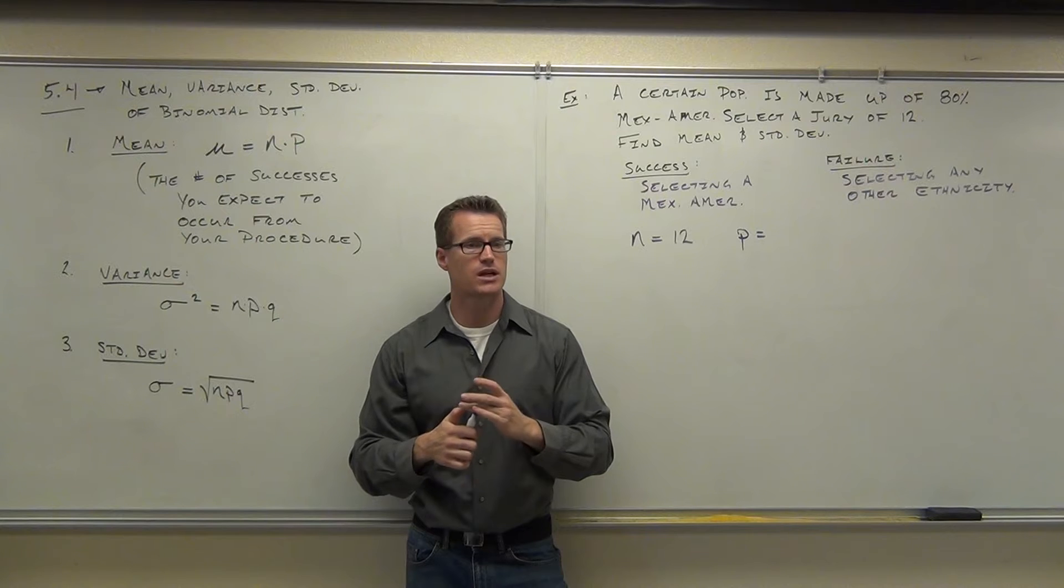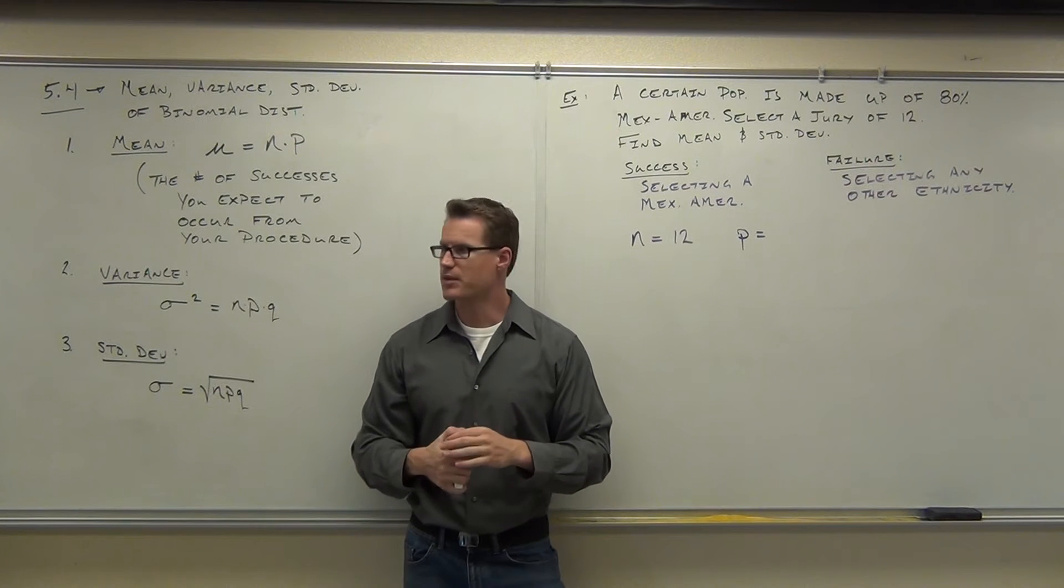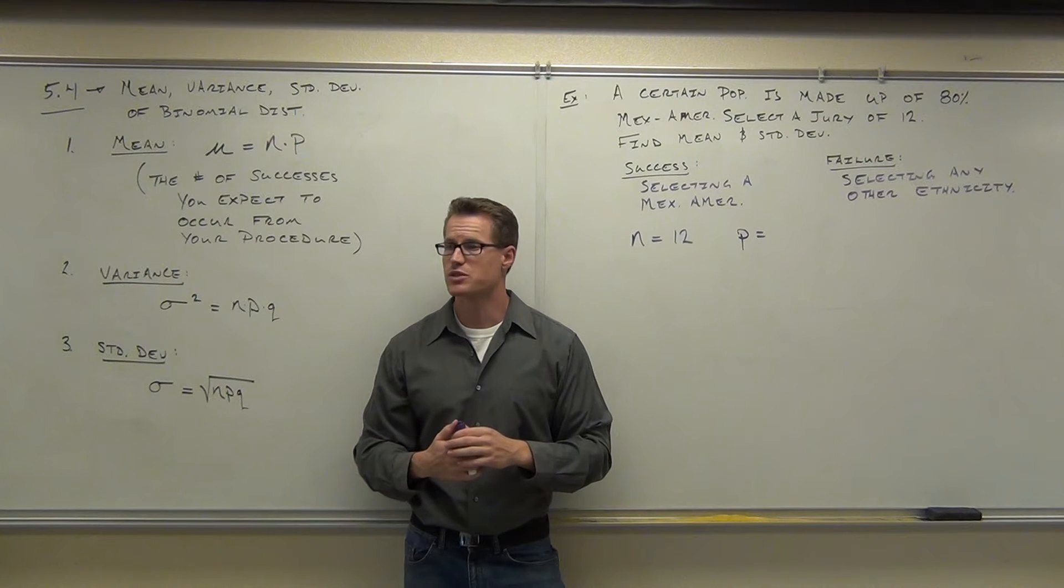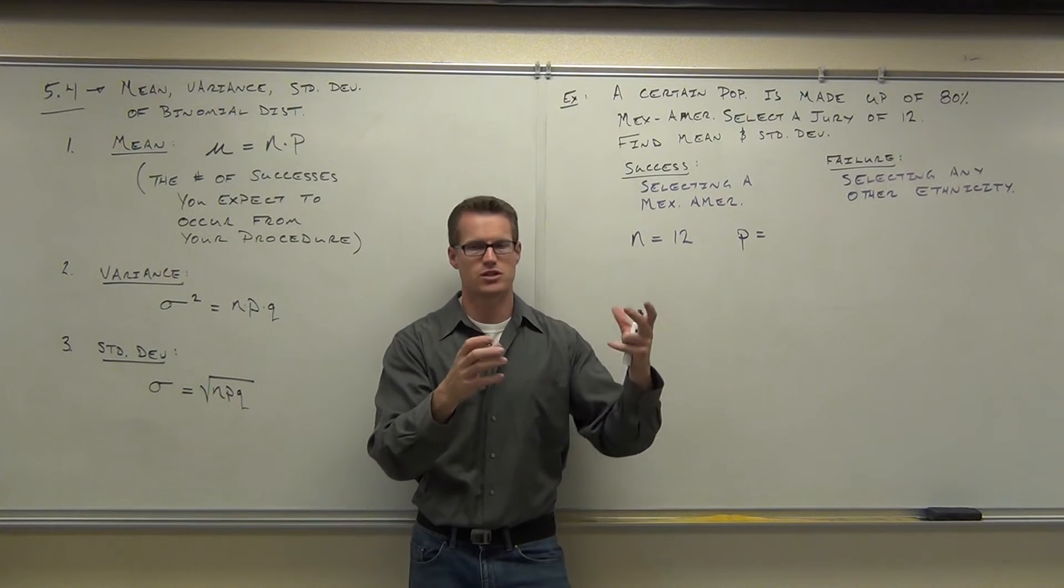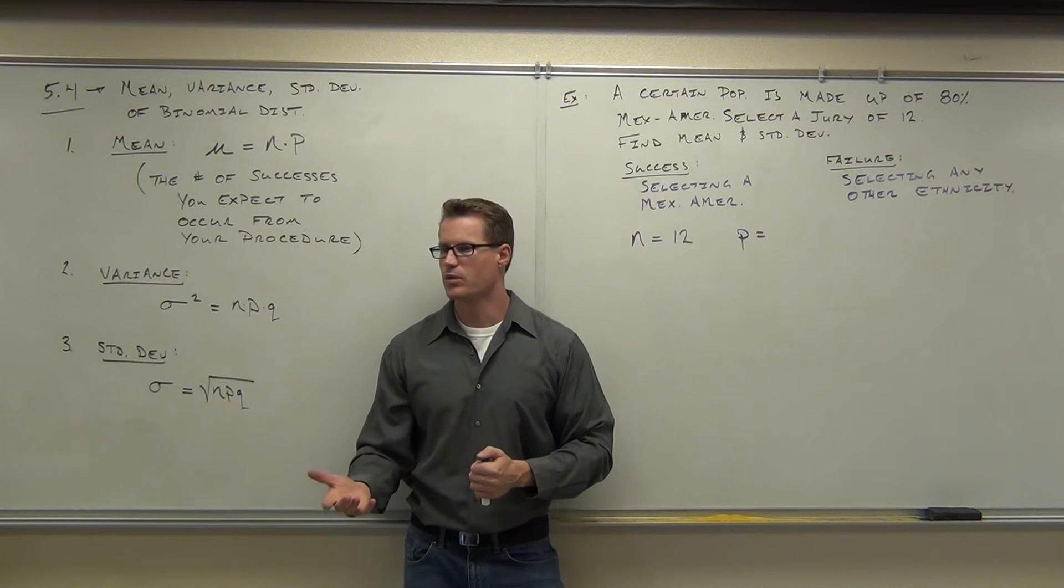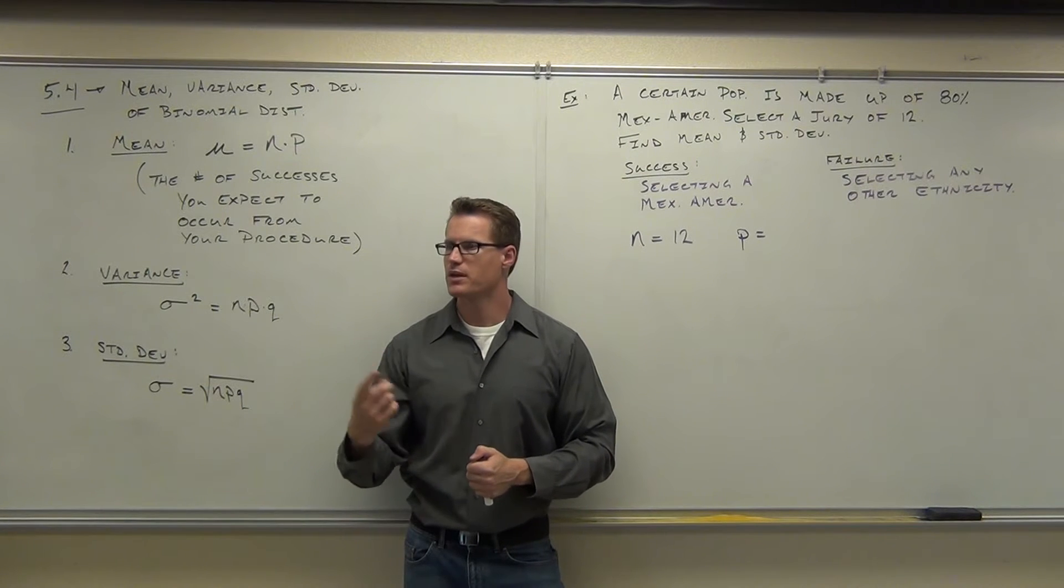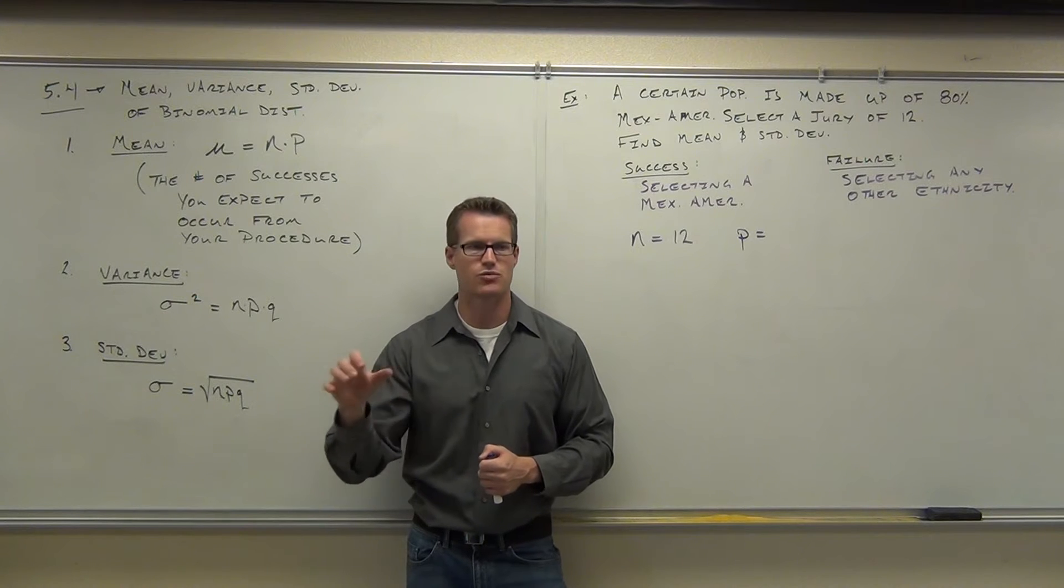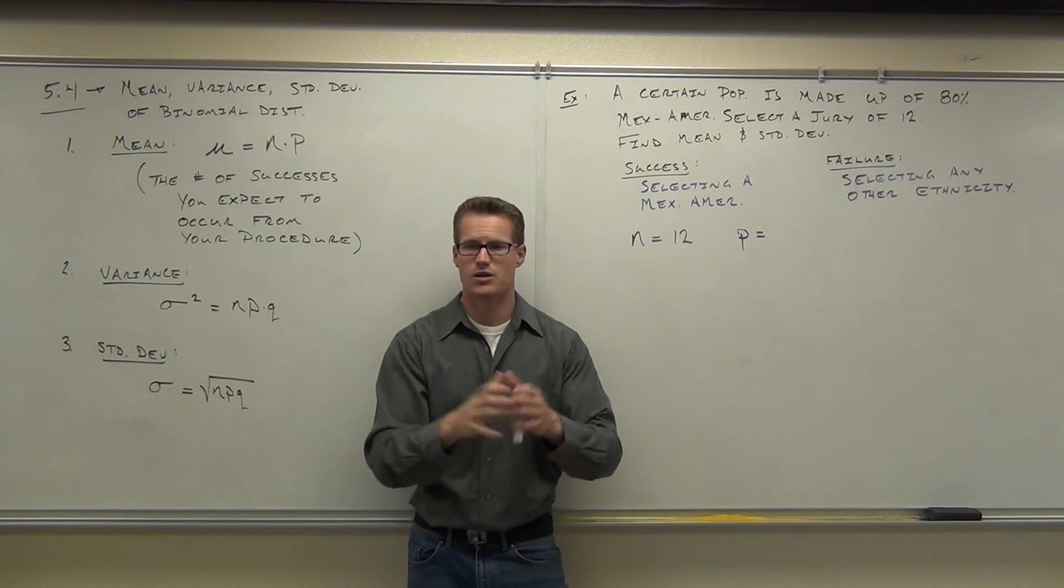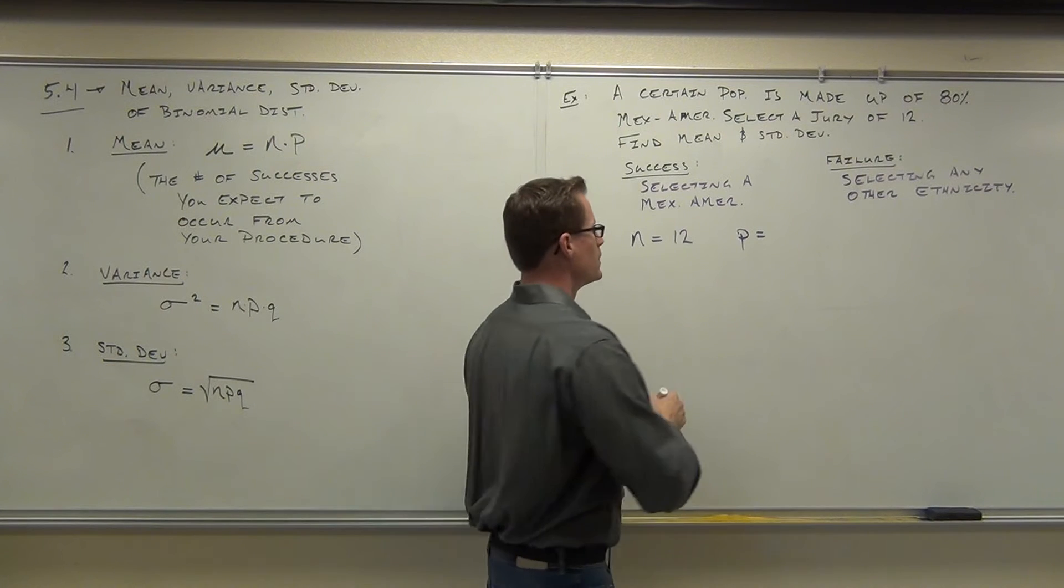80%. Now, where are you finding 80%? It's up there, right? It's not given to you explicitly. It's not said the probability of selecting a Mexican-American randomly from a population is 80%. You kind of have to read the problem, and understand that if you have a population that's 80% Mexican-American, you're selecting somebody, then the chances of randomly getting somebody that's Mexican-American is 80%.